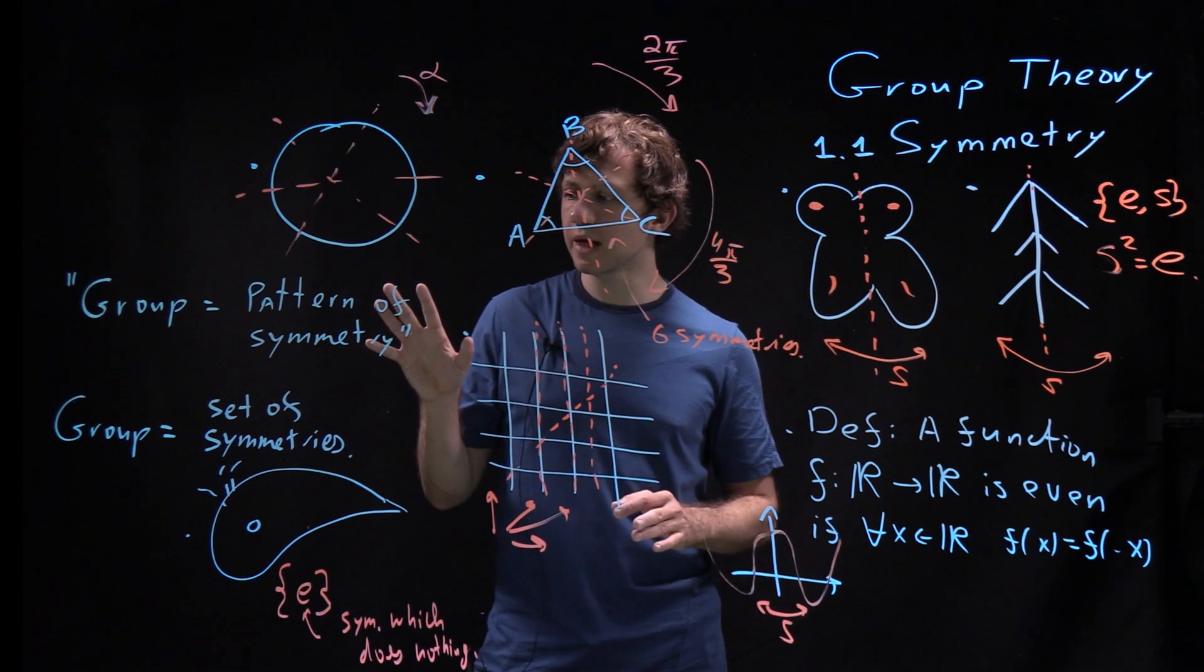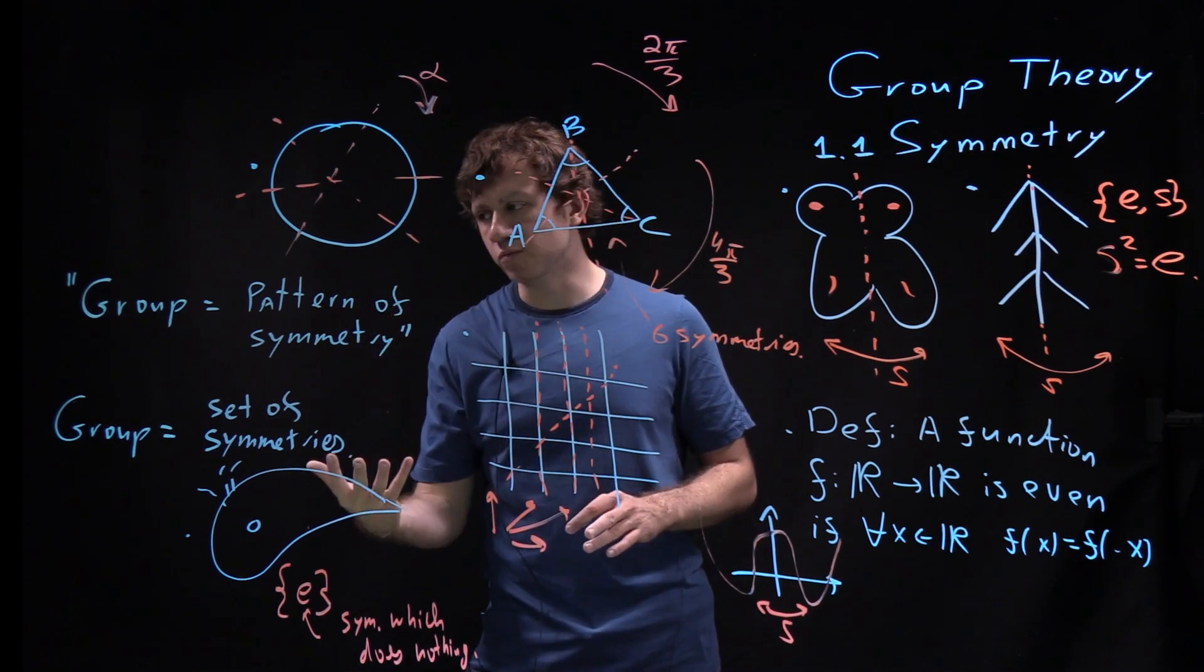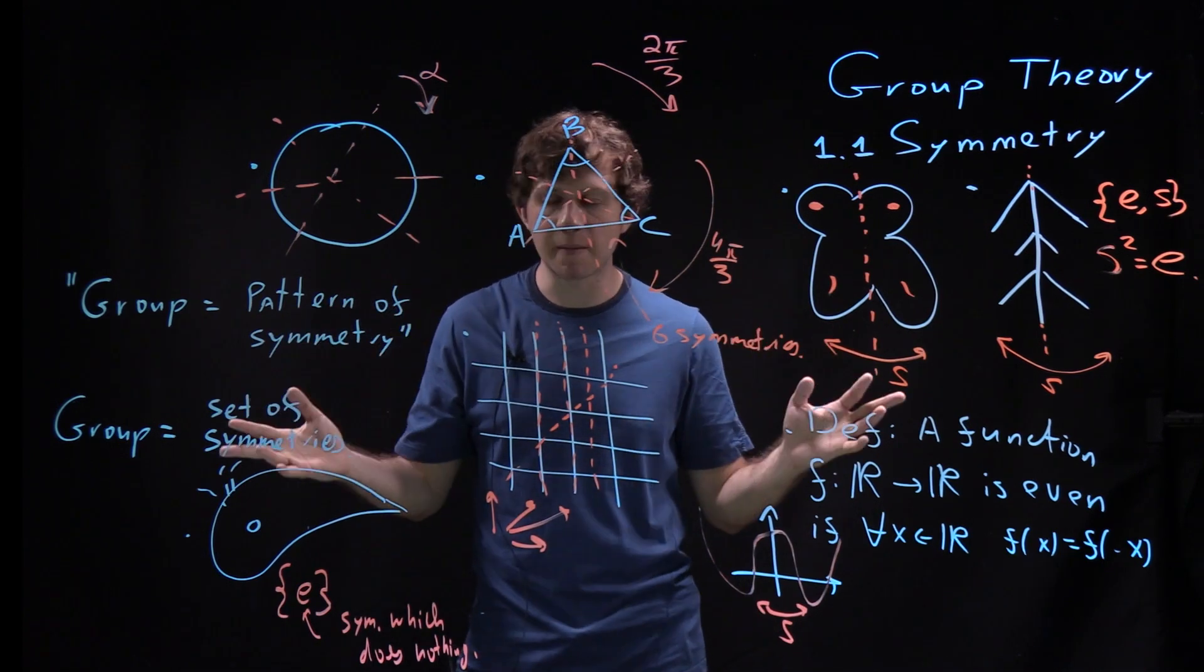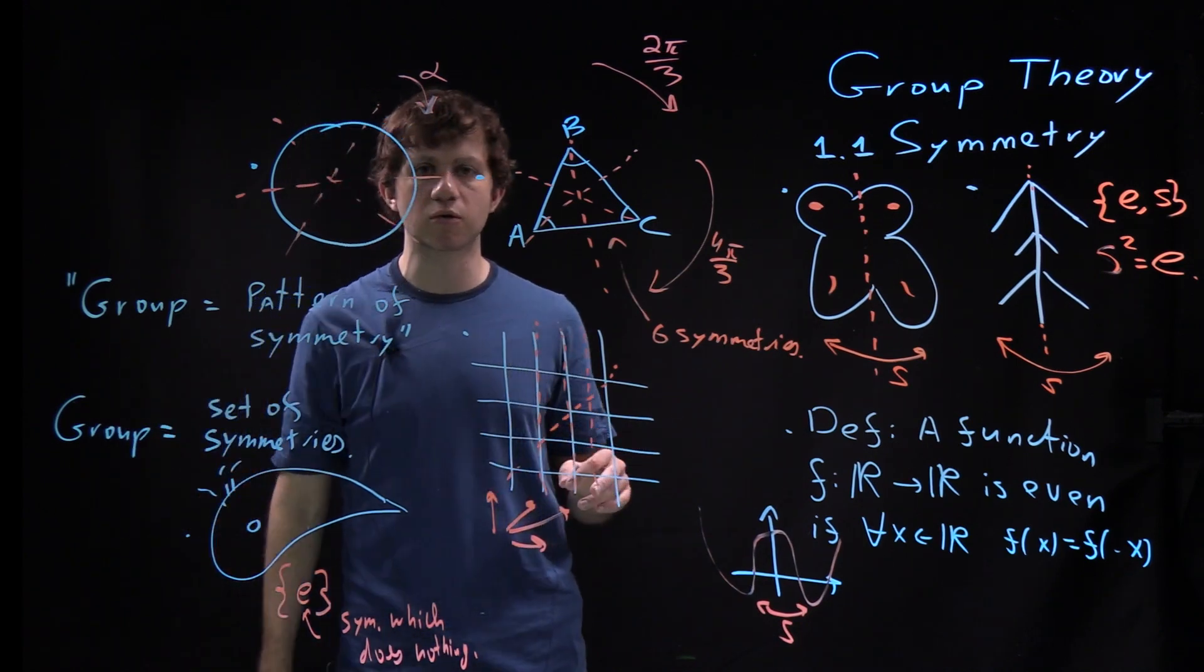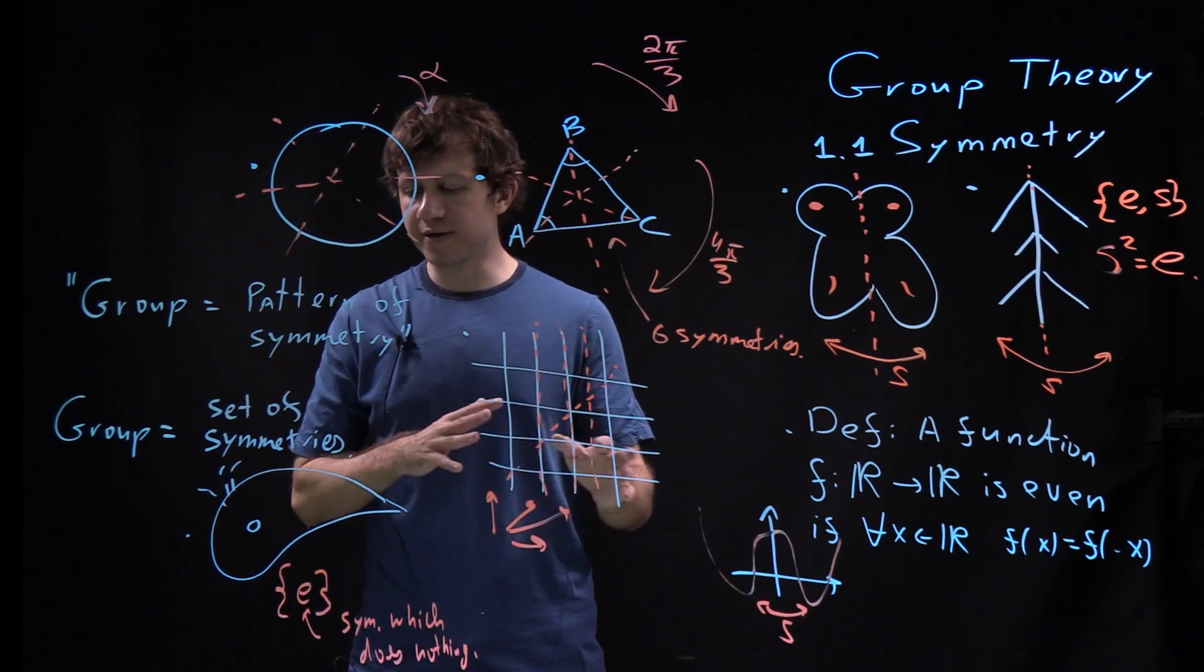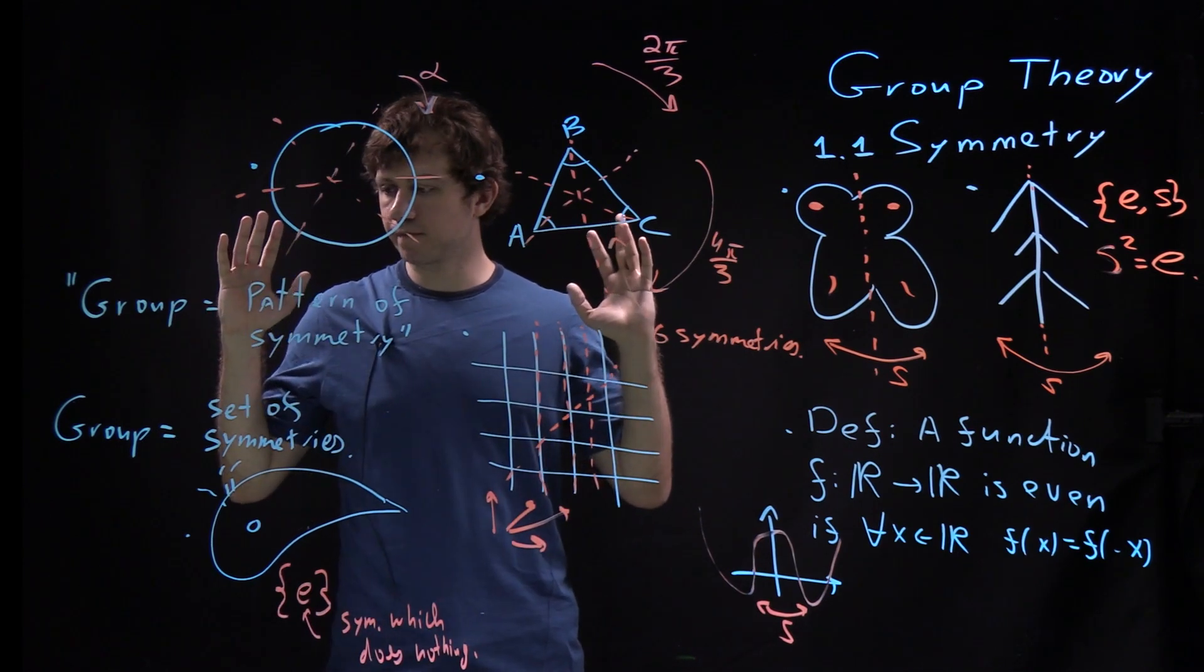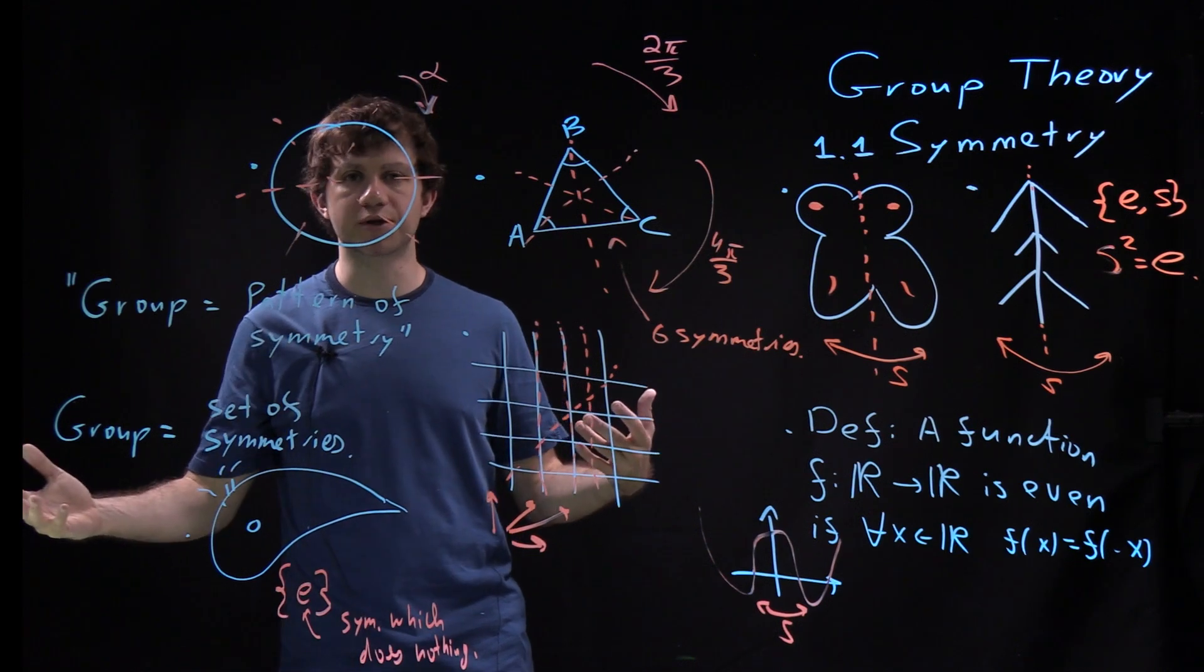And then we will look at a few more examples, give a few more definitions. And finally, I will prove the first theorem about groups, which is an interesting theorem about any group with finite number of elements called Cayley's theorem. And eventually we'll finish up with a bit of history and a plan for the remaining part of the course.